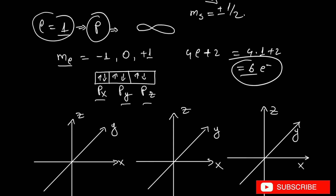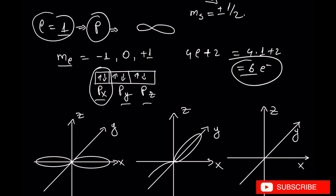The Px orbital is going to be along the x axis, Py along the y axis, and Pz along the z axis.